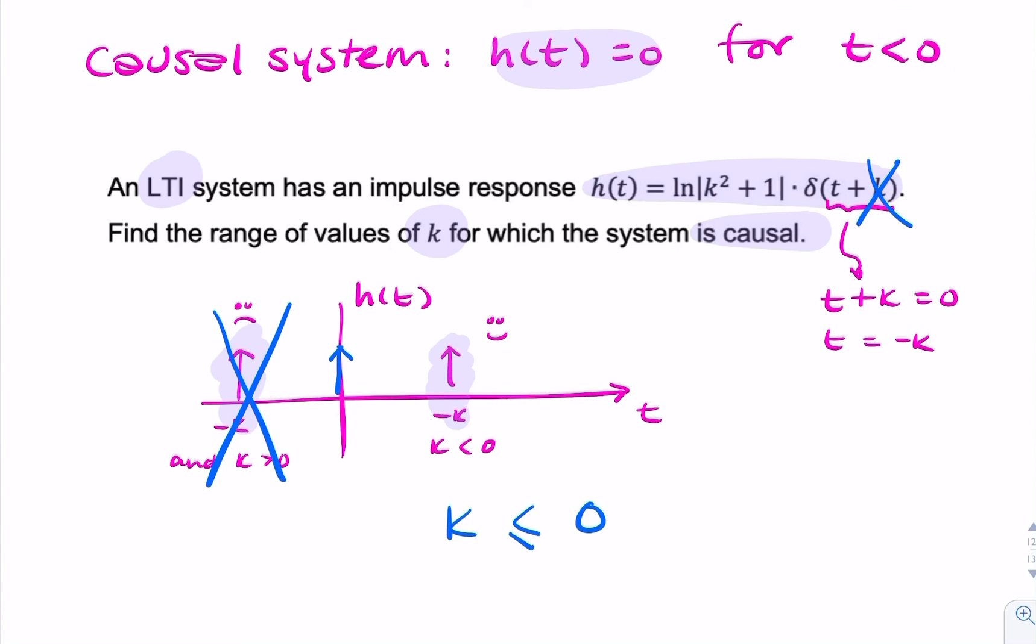So the answer to the question, what's the range of values of k for which the system is causal, is all negative values including zero. So k less than or equal to zero, and that's your final answer.